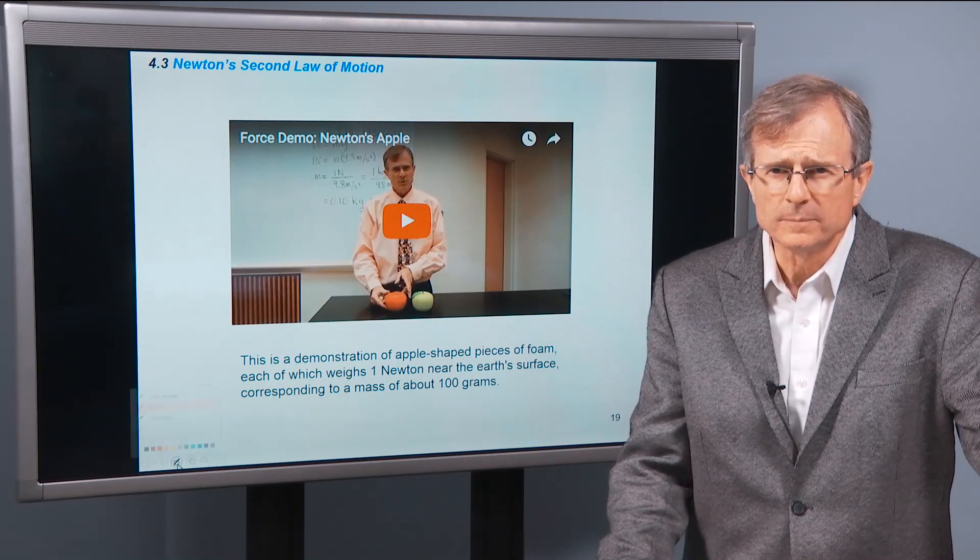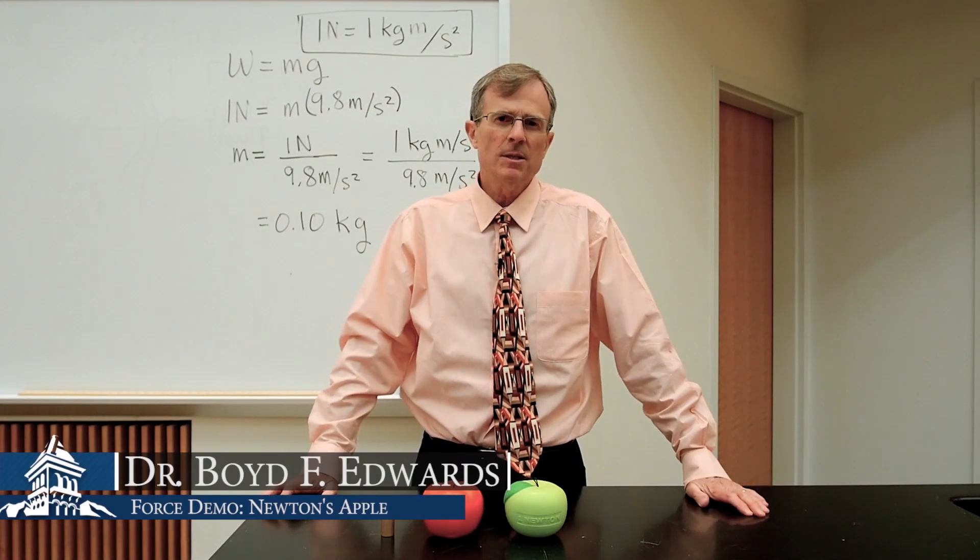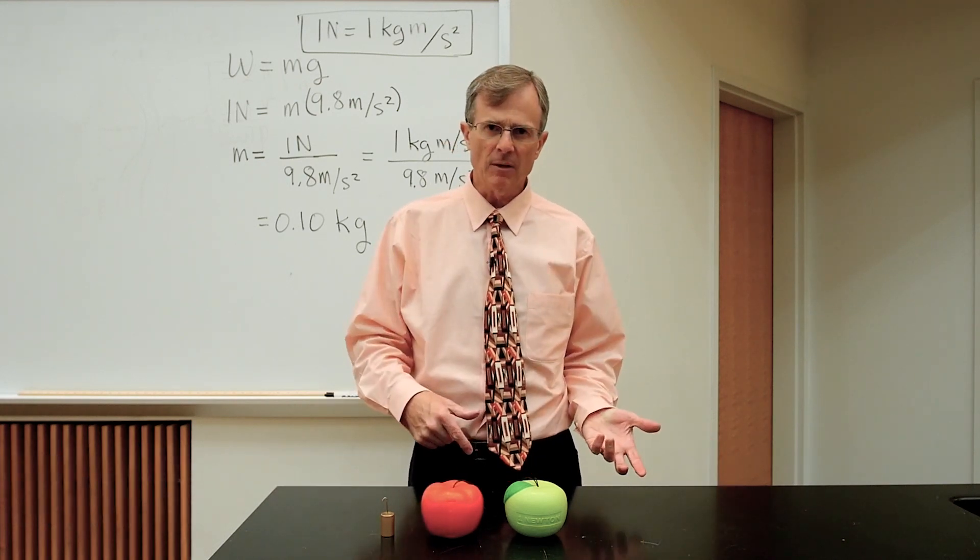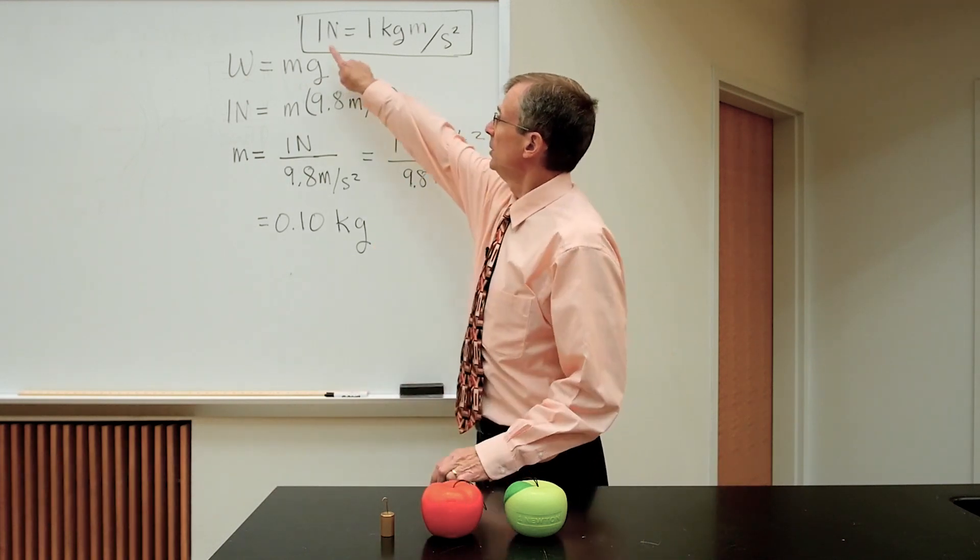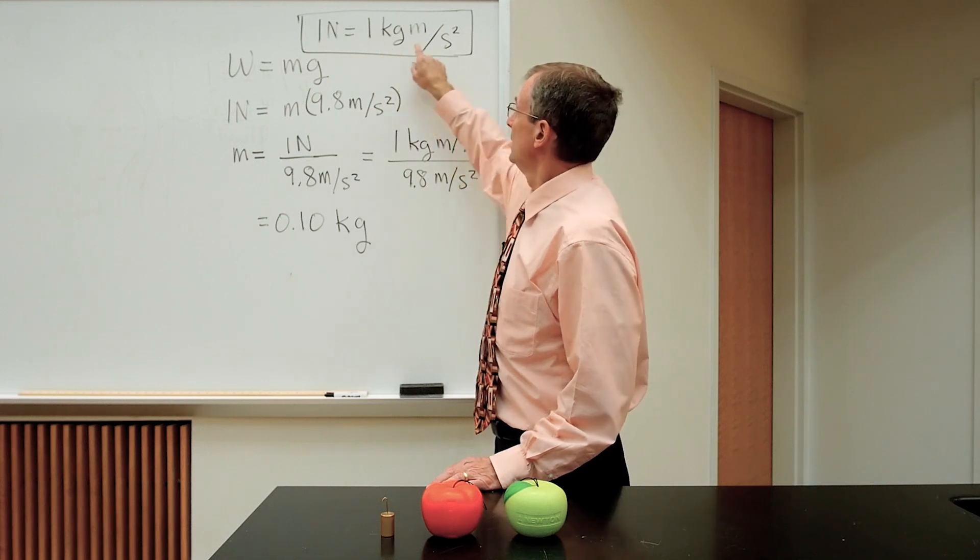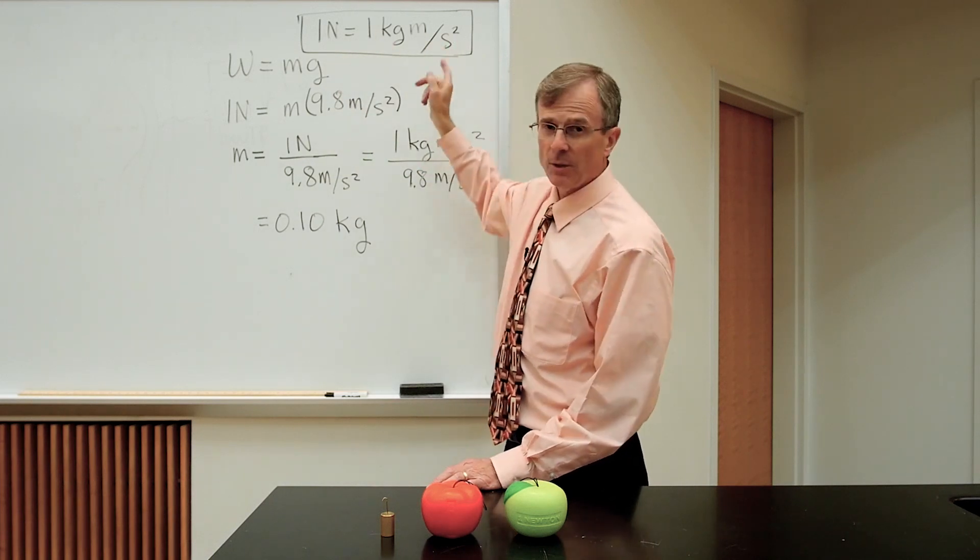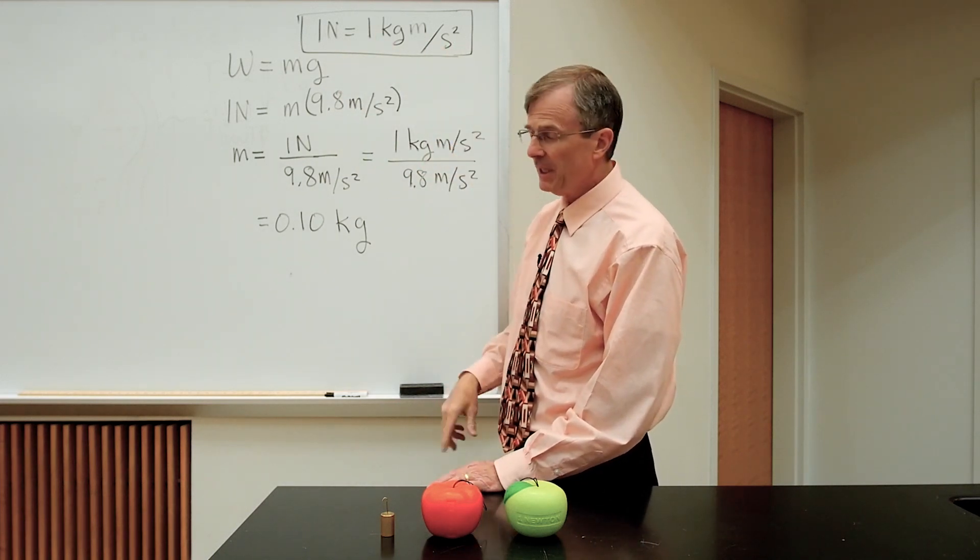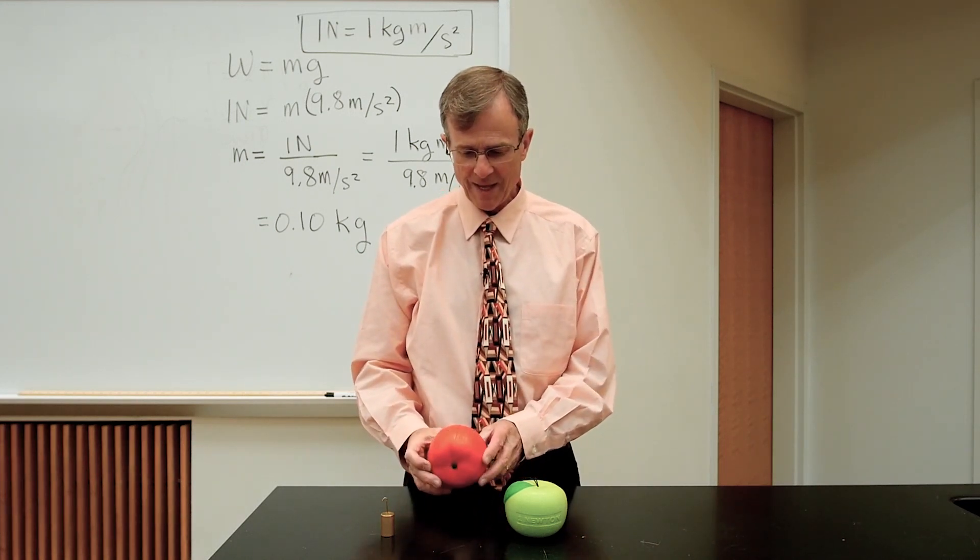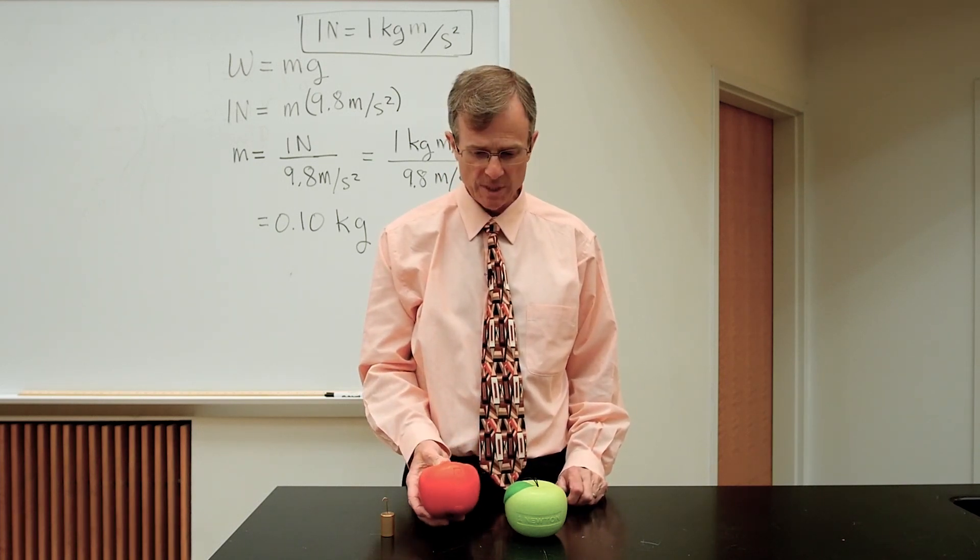Another video. The Newton is the unit of force in the SI system. A force is a mass times an acceleration. And so, one Newton is the unit of mass, the kilogram, times the unit of acceleration, which is meters per second squared. So, one Newton is a kilogram meter per second squared. These two foam apples have a weight of one Newton each.